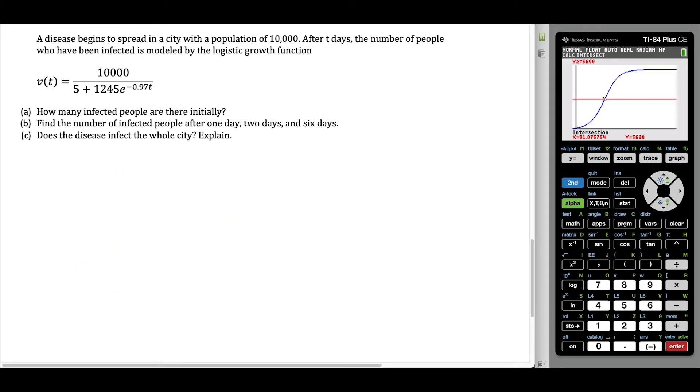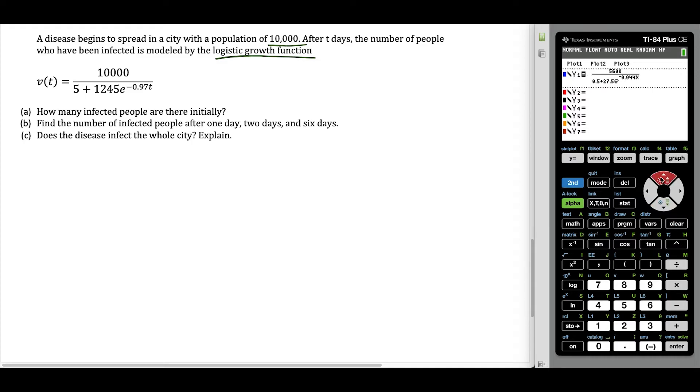Now let's look at another question here. Take a moment to read through this. Now we have a disease spreads through a city with a population of 10,000. After two days, the number of people infected is modeled by another logistic growth function, this time V(T). So we want to find out how many people were infected initially.